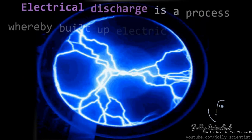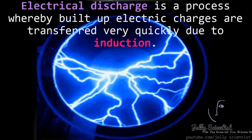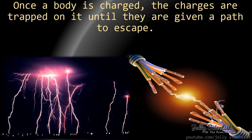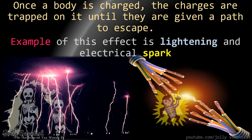Electrical discharge. Electrical discharge is a process whereby built-up electric charges are transferred very quickly due to induction. Once a body is charged, the charges are trapped on it until they are given a path to escape. Examples of this effect are lightning and electrical spark.